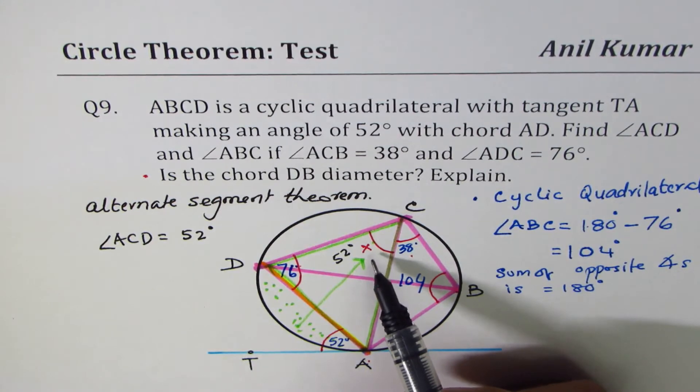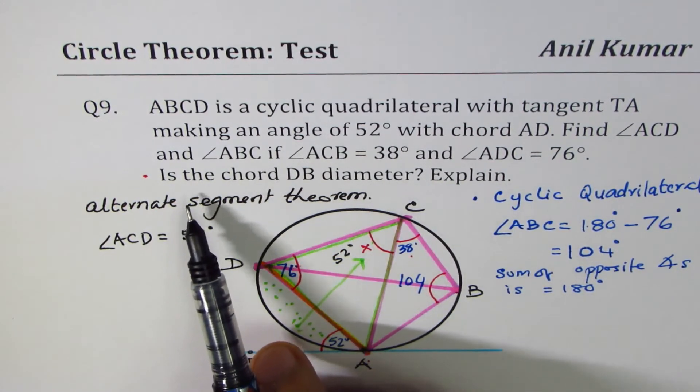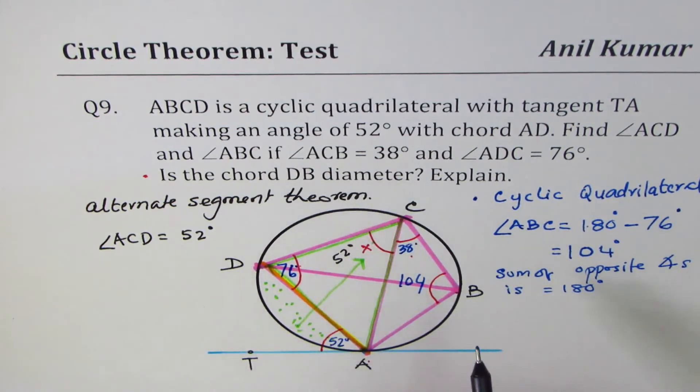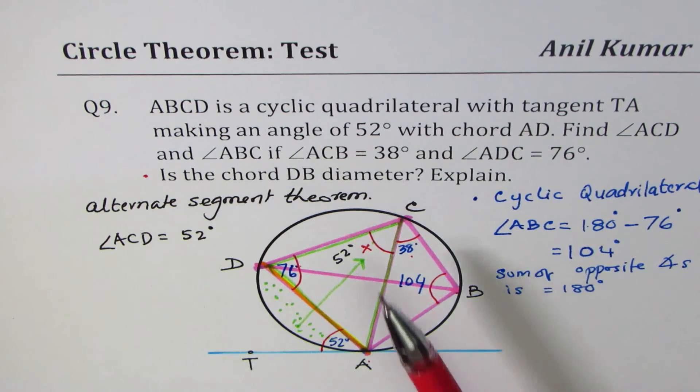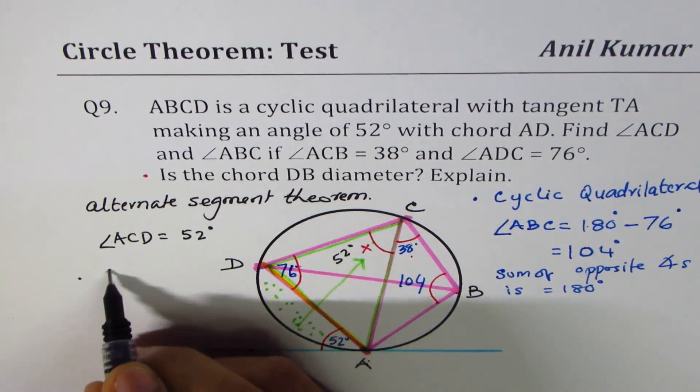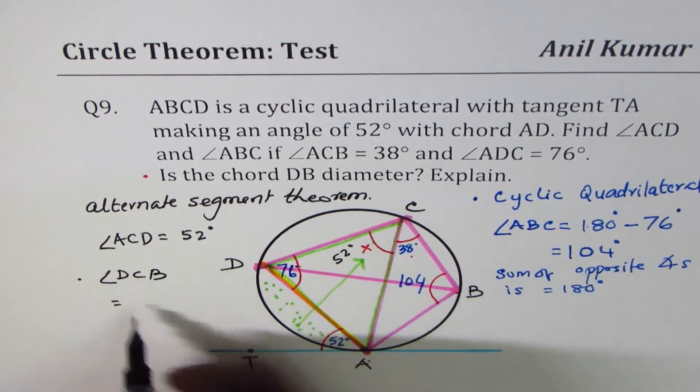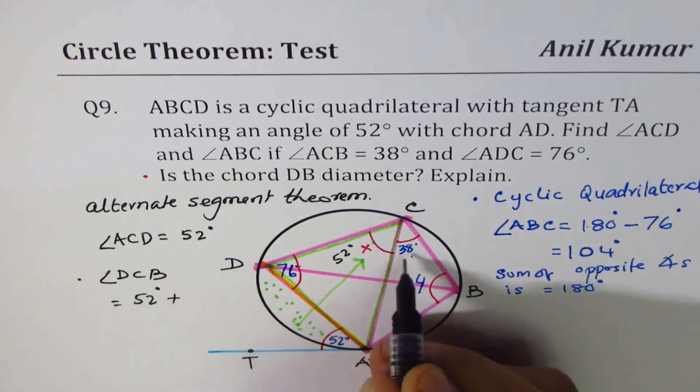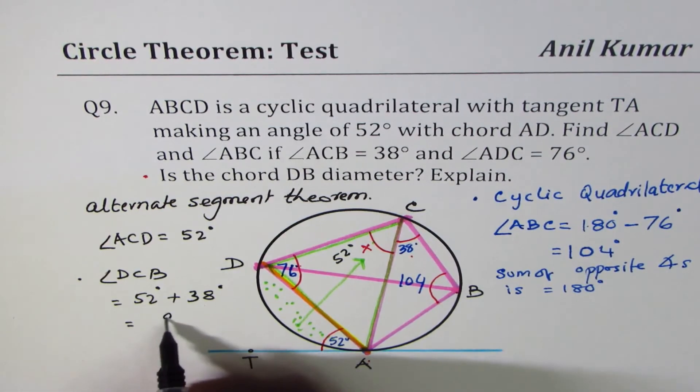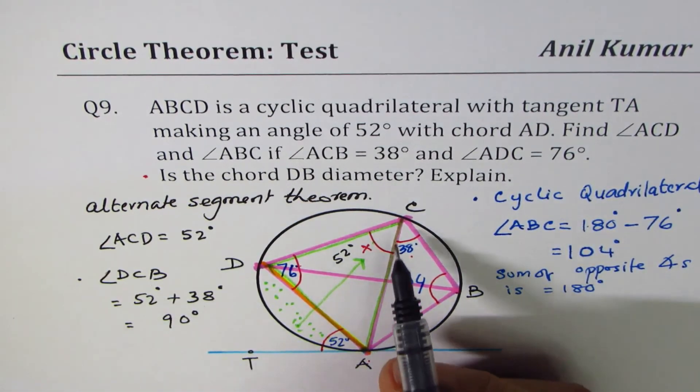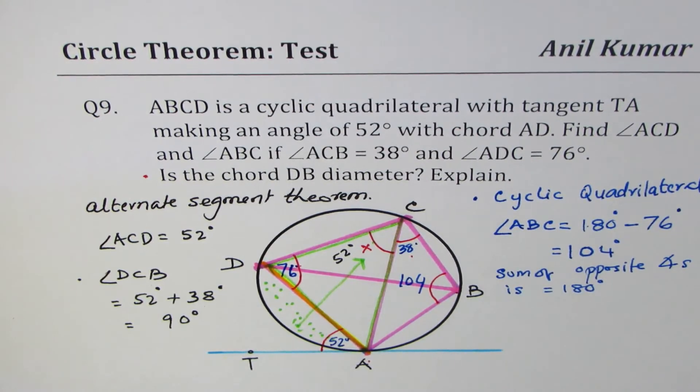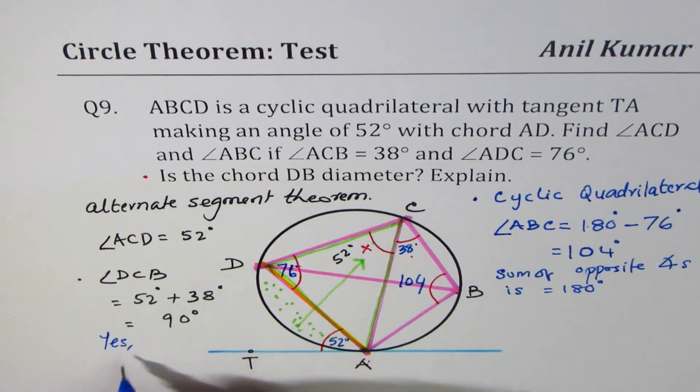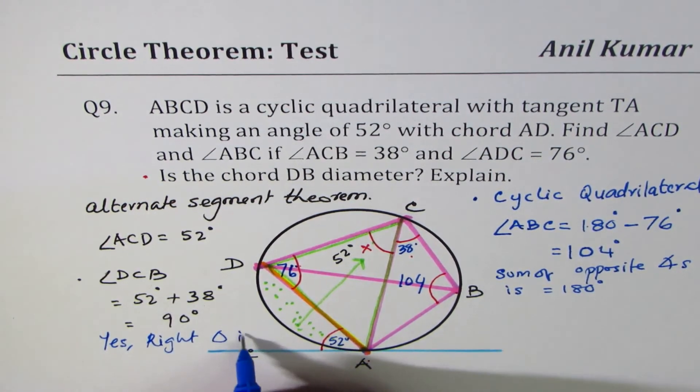Now second part of the question is: is the chord DB a diameter? If DB is a diameter then angle C should be 90 degrees. Let's check what is angle DCB. Angle DCB is 52 degrees plus 38 degrees, and that indeed is 90 degrees. Since we have a right triangle in a semicircle, that means DB is a diameter.